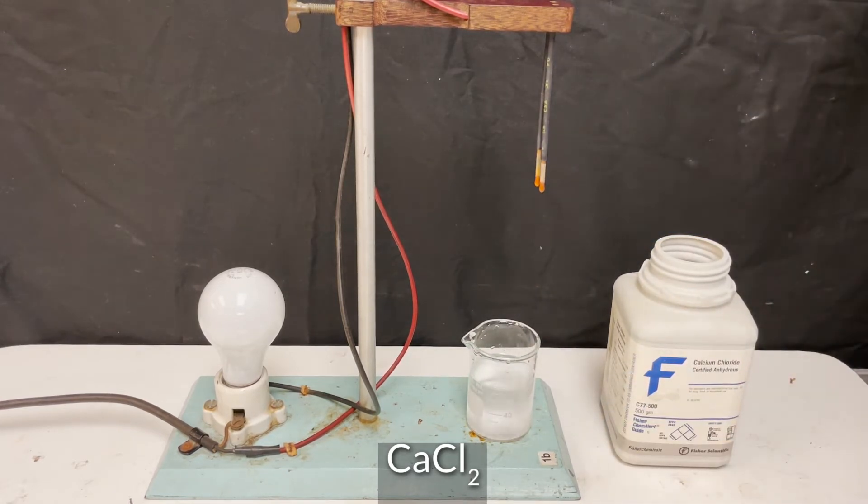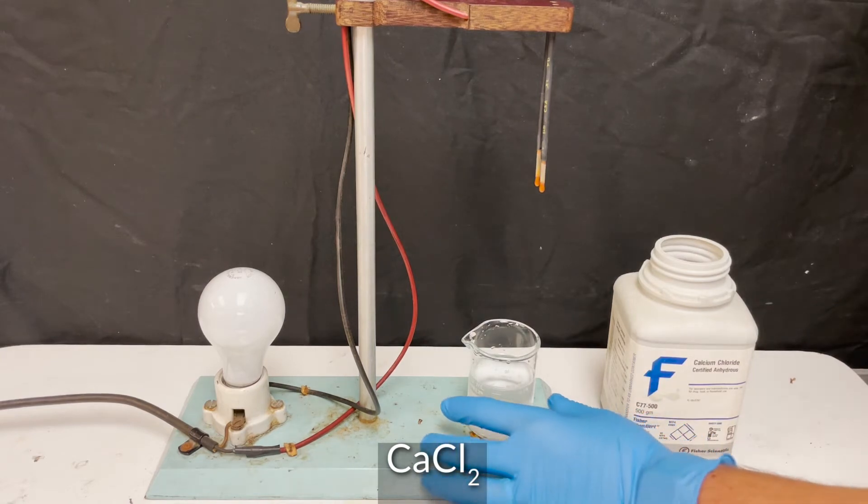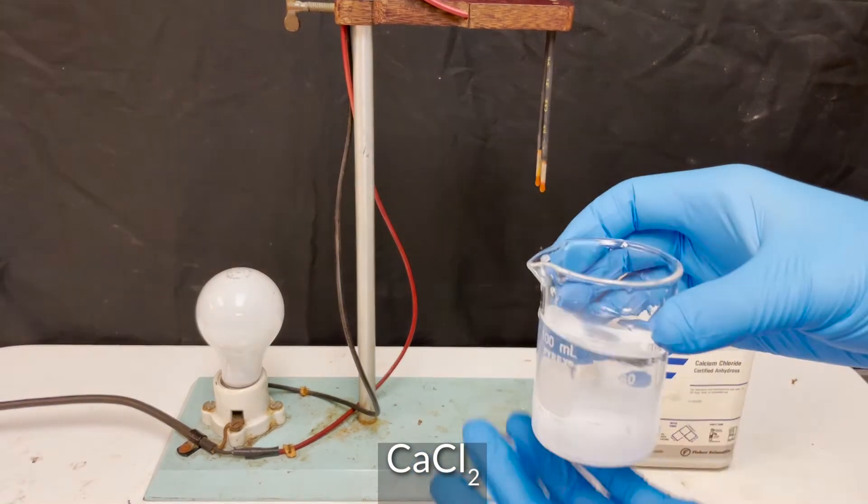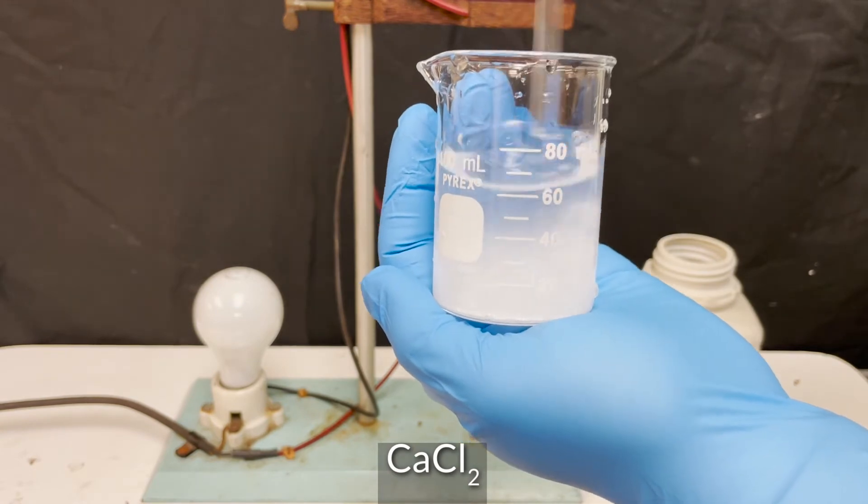Here I'm testing calcium chloride. Solubility rules predict that this should be soluble, and because it's ionic, we can predict that it should conduct electricity.